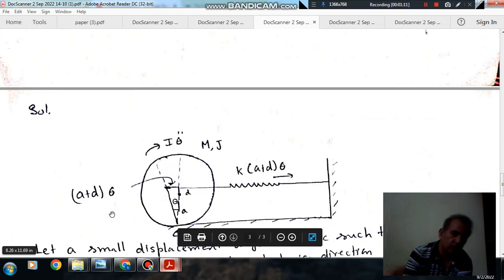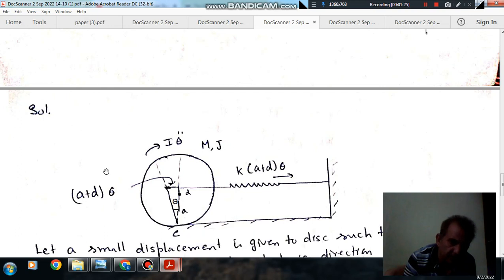Okay, so this is your spring-mass system. Let us displace the disk by an angle theta. Then the extension of spring will be (A+D)theta, and the spring force will be K(A+D)theta.